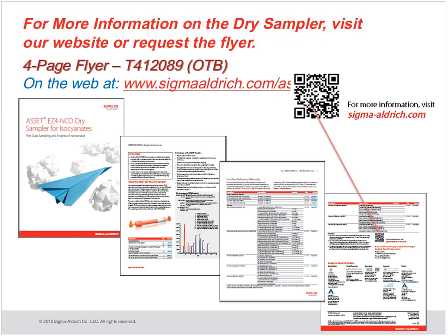Karl asks: how did the Orbo 80 and acid methods compare in terms of percent recovery for the same HDI standard? The recoveries are hard to compare directly because the standards used involve different derivatization reagents, so the derivative standards are going to be different. For the Orbo 80, it's hard to put a recovery value on it when we didn't get any detectable amount in the personal sample. The internal standards for the acid samplers were all within acceptable limits.